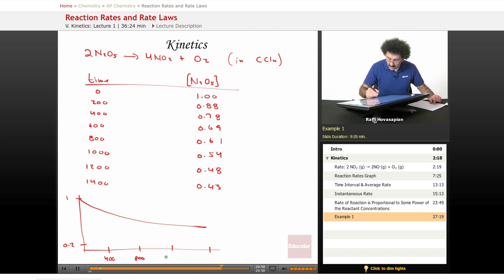400, 800, 1,200, 1,600. Nice and simple. Nothing particularly complicated. This is time. This is concentration of the species.